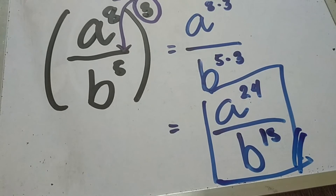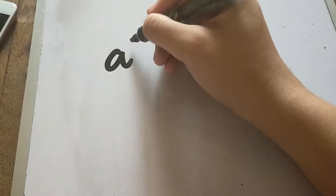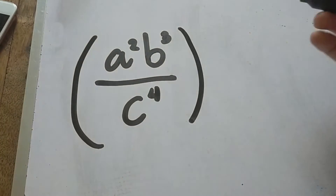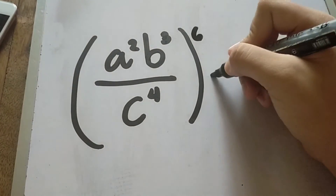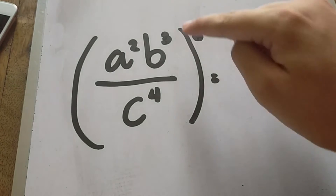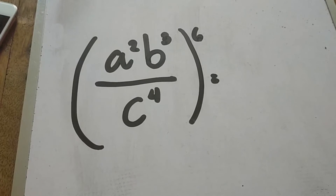Another example — let's add more variables. We have a raised to 2, b raised to 3, all over c raised to 4, and they are all raised to 6. In this case, we are going to apply two rules: power of a quotient and power of a product, because we have two variables in the numerator.